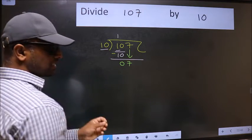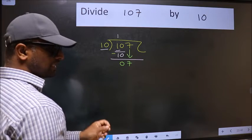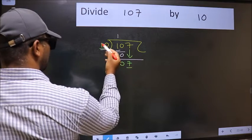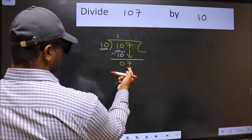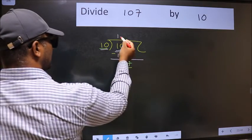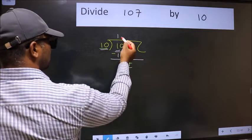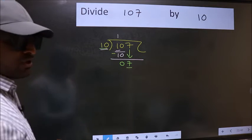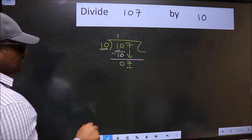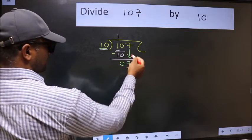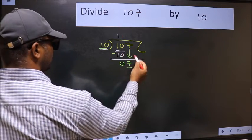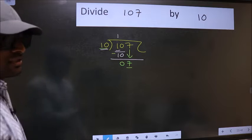After this step, the mistake happens. And the mistake is this: here we have 7 and here 10. 7 is smaller than 10. So what many do is they directly put dot, take 0, which is wrong. Why is it wrong? Because just now you brought this number down, and in the same step you want to put dot, take 0, which is wrong.